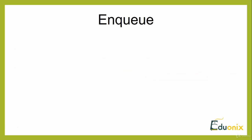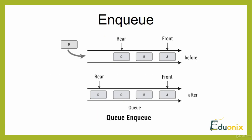Enqueue is used for inserting a particular element in a queue. Queues maintain two data pointers: the front pointer and the rear pointer. Therefore, its operations are comparatively more difficult to implement than those in a stack. In stack there was no complication, but for queue you need to understand two basic terms: the front and the rear.